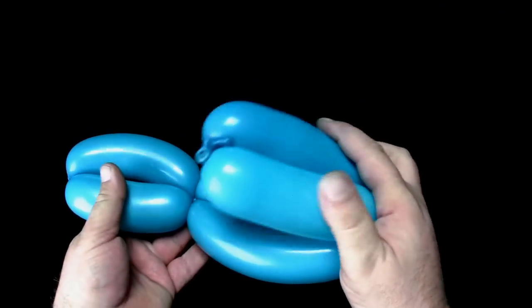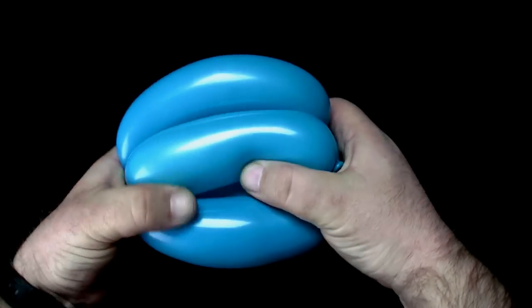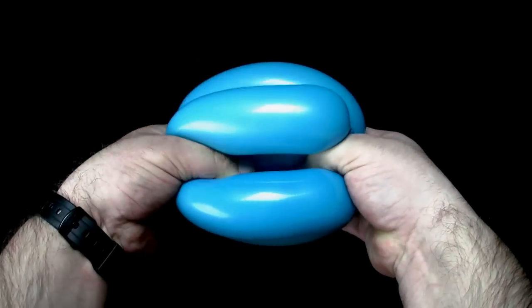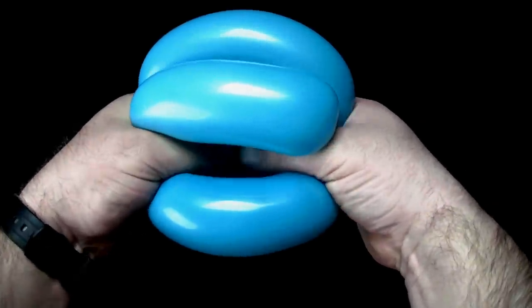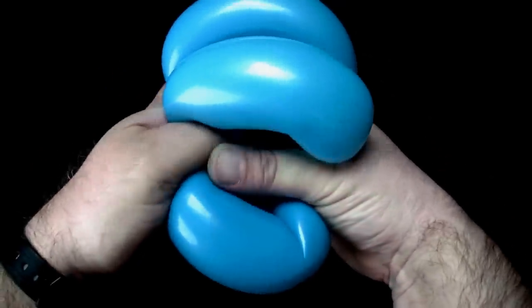Fold the balloon at the twists so the one third portions are stacked upon each other. Hold the balloon at the twists at either end and push them together at the middle, forcing each bubble into a loop.